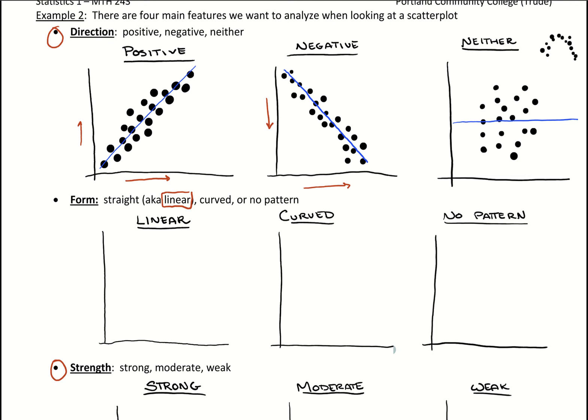So describing direction, we should have something that looks linear. So typically we'll switch between is it a positive or negative direction to the graph. Then in describing form, we should have linear curves, but if we have the curved or no pattern, we want to be a bit careful.